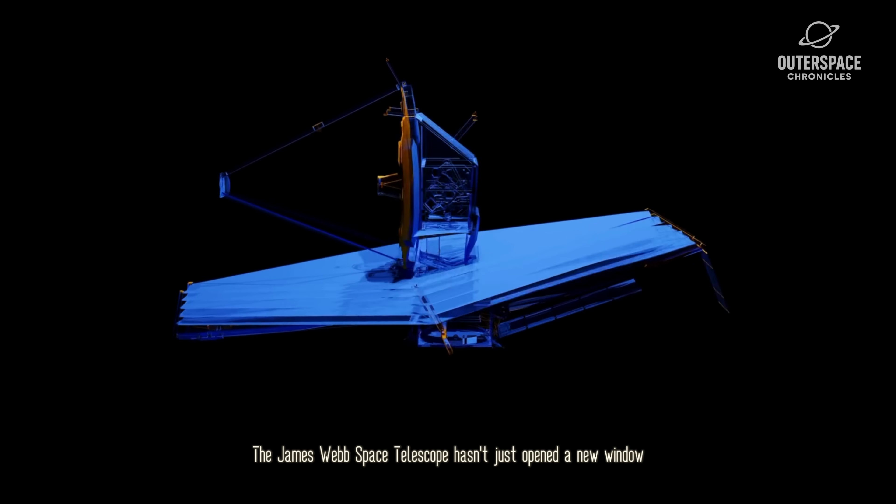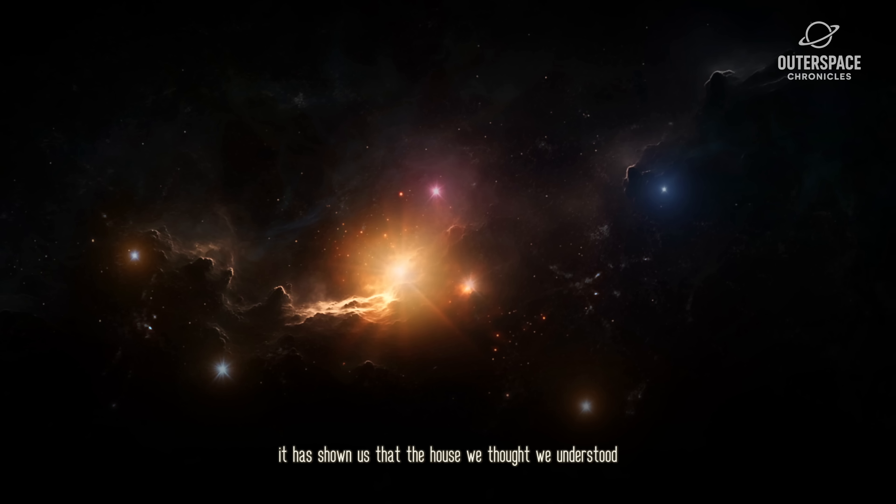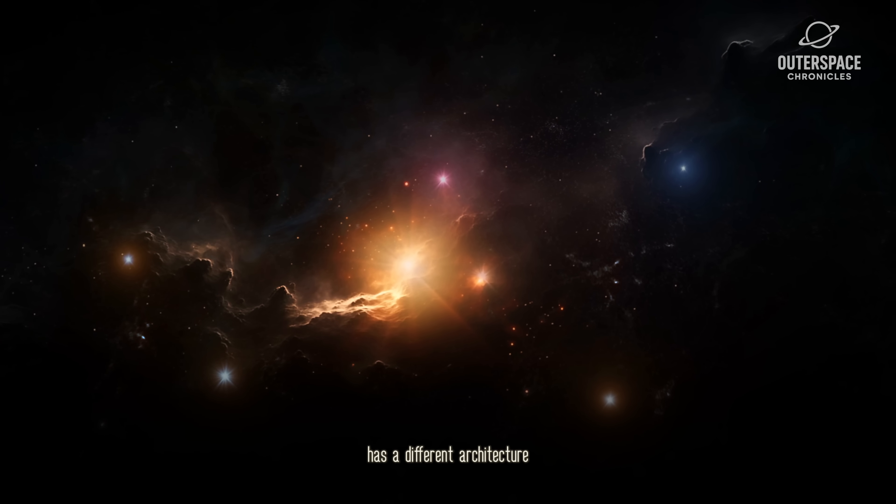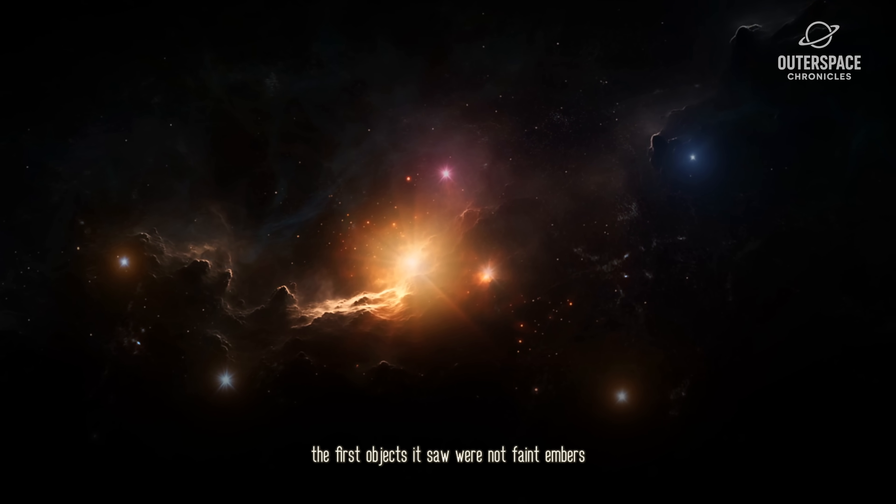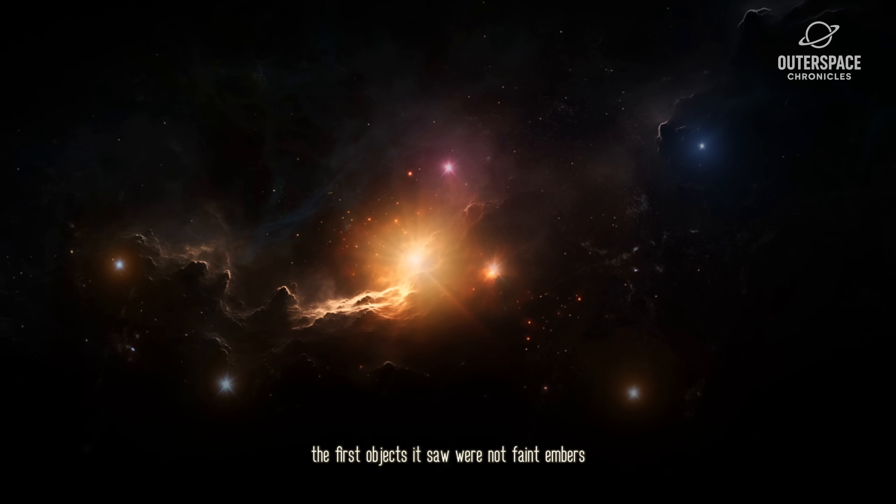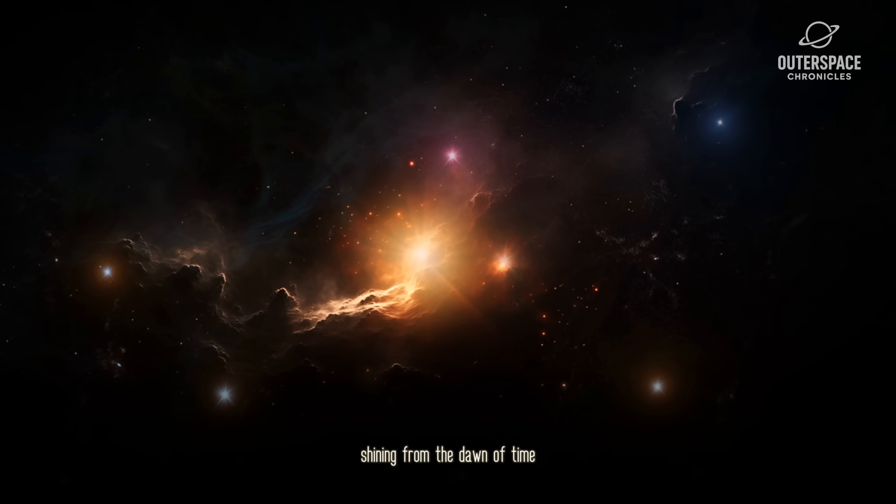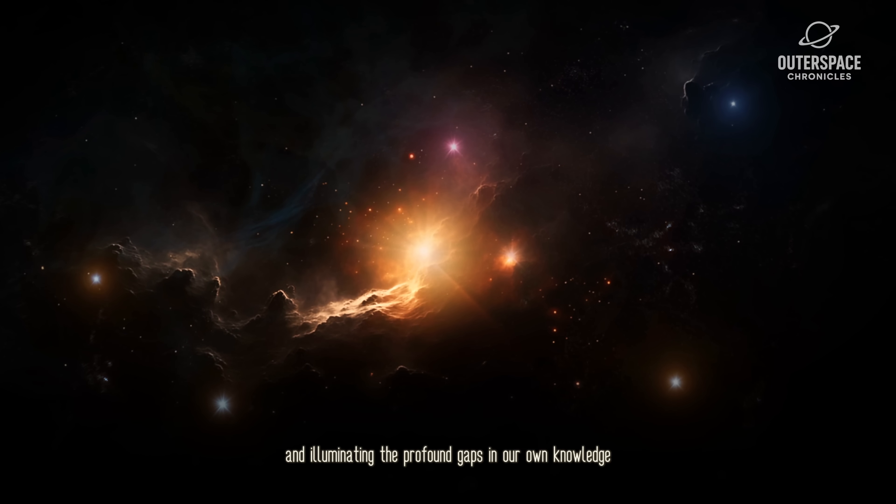The James Webb Space Telescope hasn't just opened a new window. It has shown us that the house we thought we understood has a different architecture. The first objects it saw were not faint embers. They were cosmic lighthouses shining from the dawn of time and illuminating the profound gaps in our own knowledge.